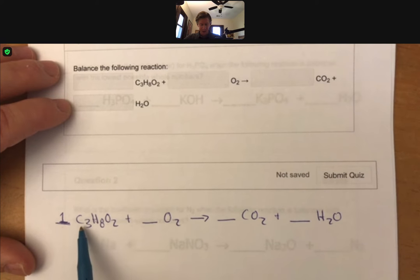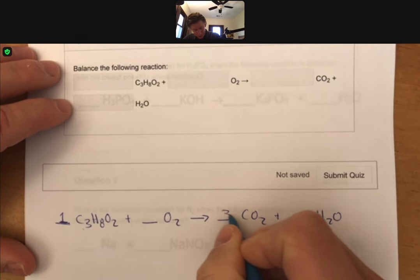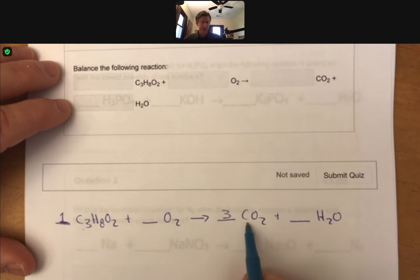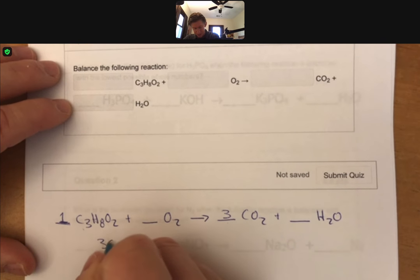I've got one times three, that's three carbons. So I'm going to put a three on the other side in front of carbon dioxide. That gives me three carbons on both sides.